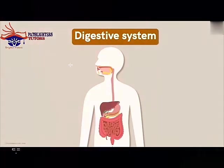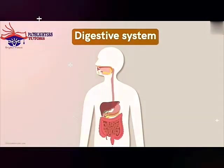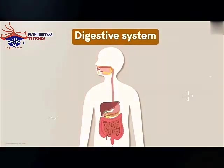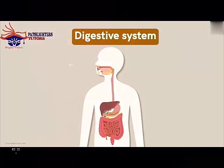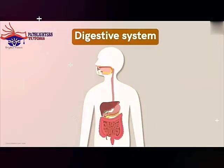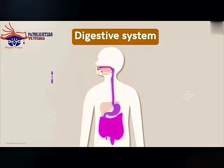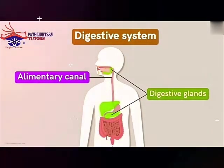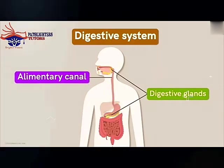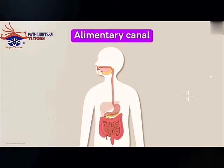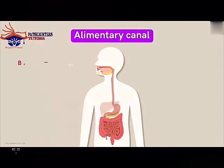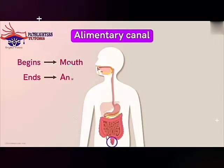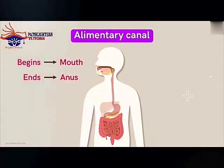So we have to divide this system into different parts for our convenience. We will divide the digestive system into two parts: namely the alimentary canal and the digestive glands. The alimentary canal is a long muscular tube which begins at the mouth and ends at the anus. The diameter of this tube varies from one person to another.